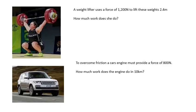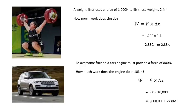Here's another couple of examples that you can have a go at. Pause the video, have a go at them. I'll show you the answers in 3, 2, 1. There's the first one: work equals force times distance delta x, so 1,200 times 2.4 is 2.88 kilojoules. And the second one: W equals F times delta x, so 800 times 10,000 because it's kilometers, which is 8 million joules or 8 megajoules.